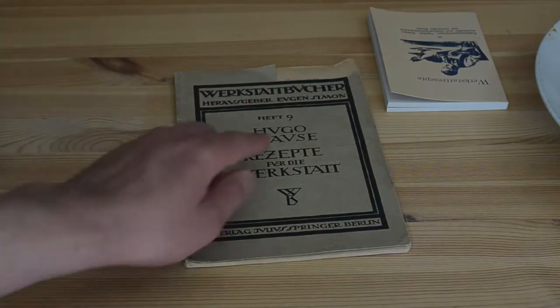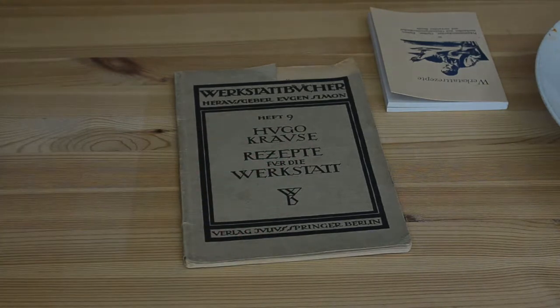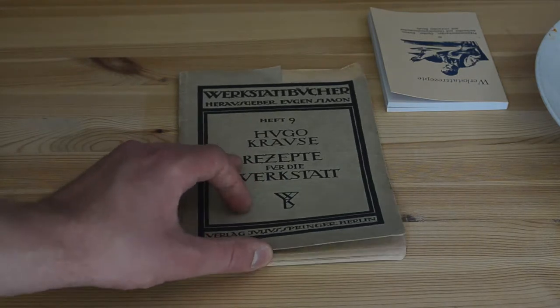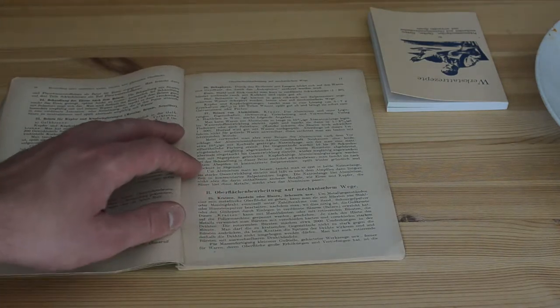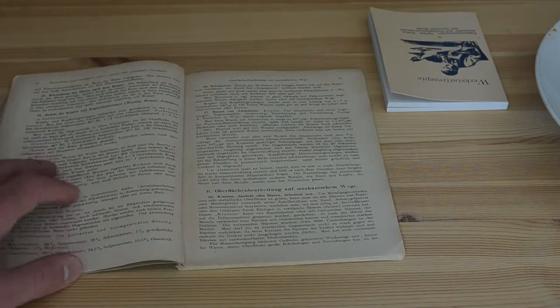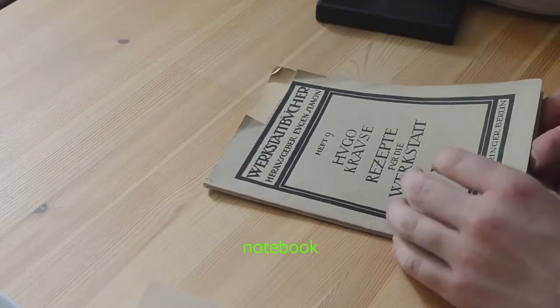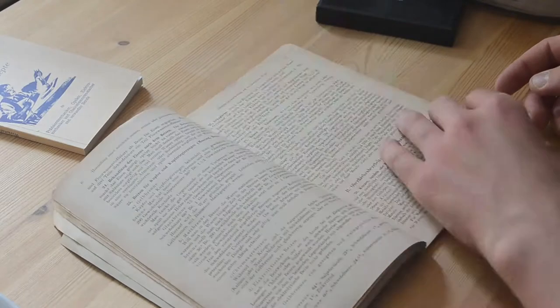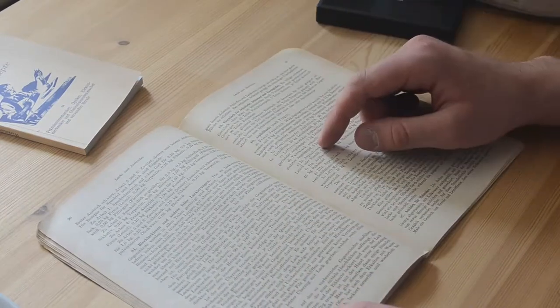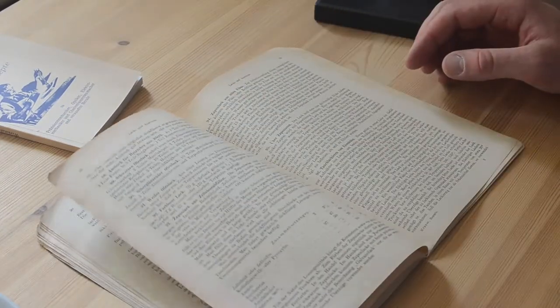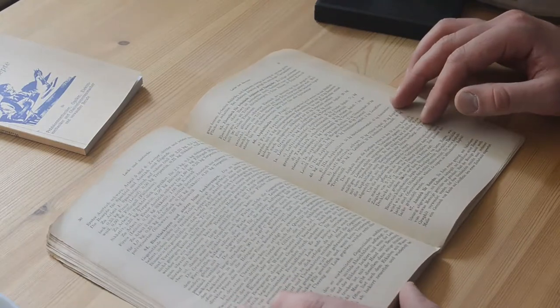This is a workspace book by Hugo Krause with recipes for the workspace. In this book there are some recipes for Japaning and I will put all recipes in the description so everyone can benefit. It's a German book. Here we have the Japaning part with two sides of different Japaning and lacquers.